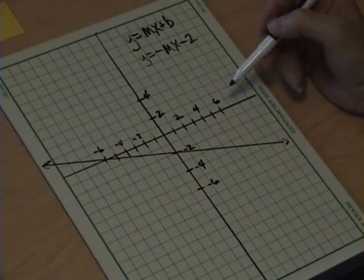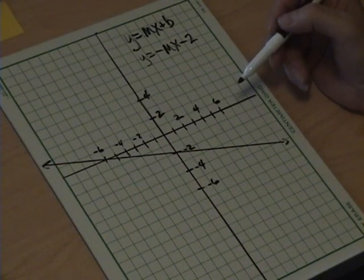All right, to calculate the slope, we have to figure out the rise over the run, or the change in y over the change in x.